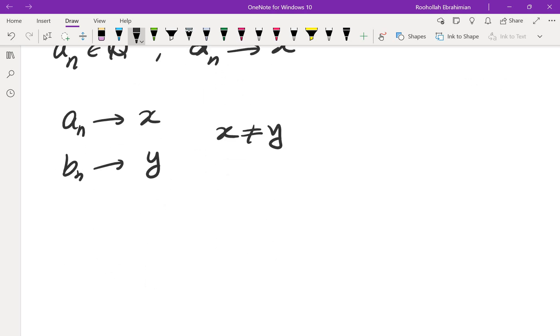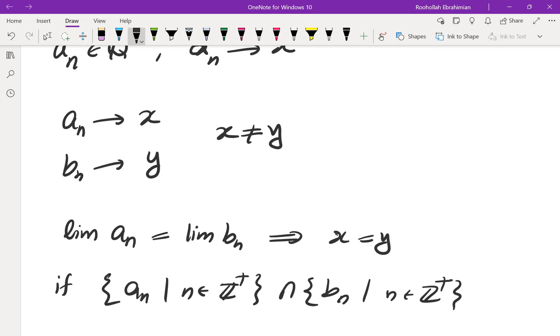then these two sequences only intersect at finitely many points. Because if they did intersect at infinitely many points, then the limits would have to be the same, which means X and Y would be the same. This is if the set AN intersection with the set BN were infinite. And of course, N goes to infinity. So if this were infinite, then the limits would be the same, which means X and Y would be the same, which is a contradiction.